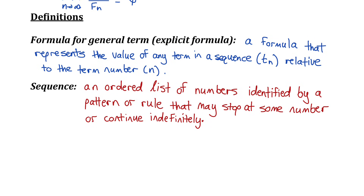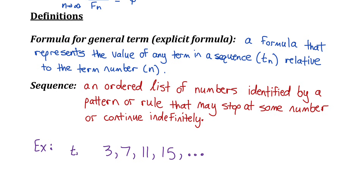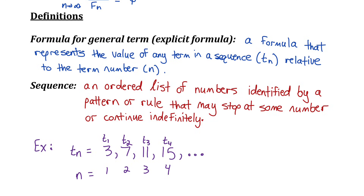To help you understand this, let's look at this sequence: 3, 7, 11, 15, and so on. The numbers 3, 7, 11, and 15 are the actual values of the terms, which we represent with Tn. Each value can be indexed by its term number n. 3 is the first term, 7 is the second term, 11 is the third term, and so on. So term 1 is 3, term 2 is 7. The key distinction is that n represents the term number, while Tn is the actual value of the term in the sequence.